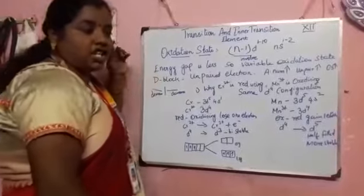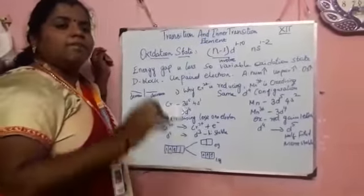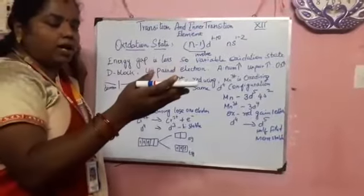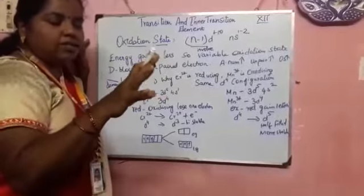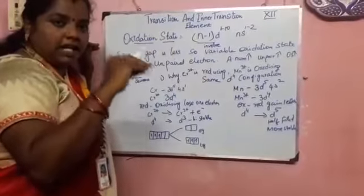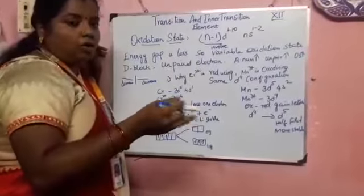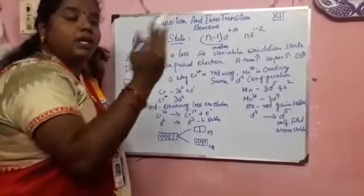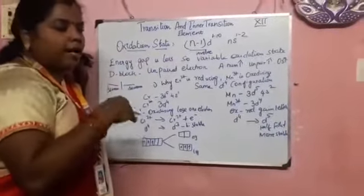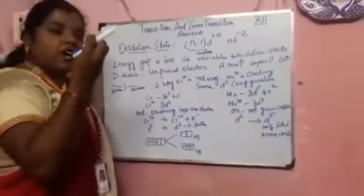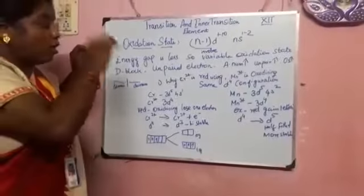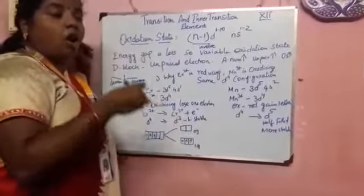Today we are going to see about oxidation state. What is meant by oxidation state? Oxidation state means an atom which has bonded with another atom. An atom of one element combines with the atom of another element and a bond is formed. For bond formation, either the atom should lose an electron, or gain an electron, or they have to share electrons mutually. In oxidation state, we see how many electrons have been shared or how many electrons have been lost.